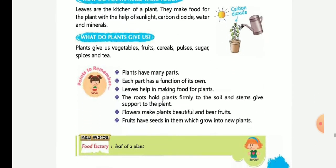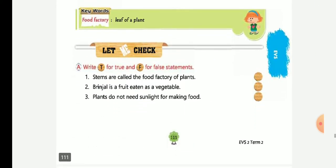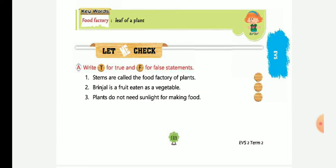So now we come to true and false. Stems are called the food factory of plants. Is it true? No, it is false. Brinjal is a fruit eaten as a vegetable. True. Plants do not need sunlight for making food. False, very good.